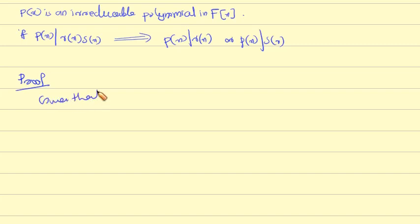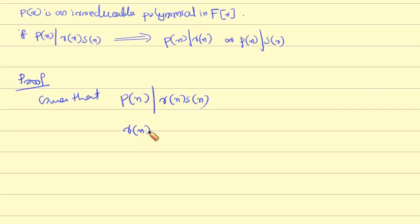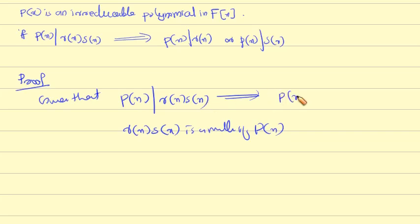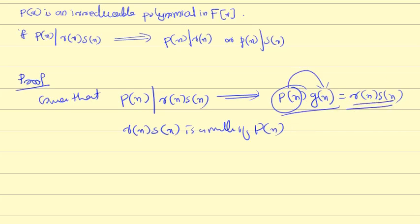Given that p(x) divides r(x) into s(x). This means p(x) times some g(x) equals r(x) times s(x), which belongs to the principal ideal generated by p(x).